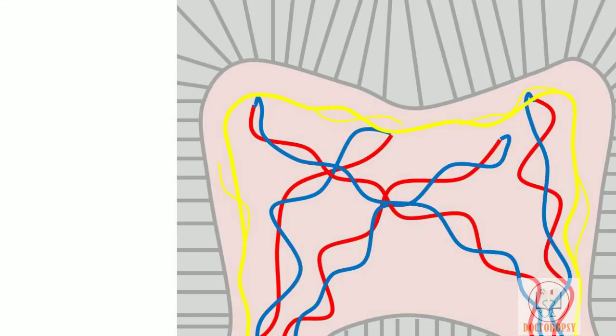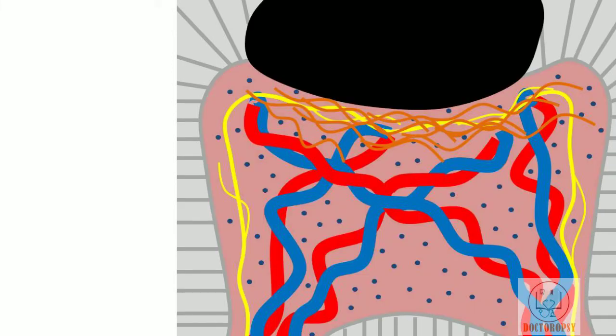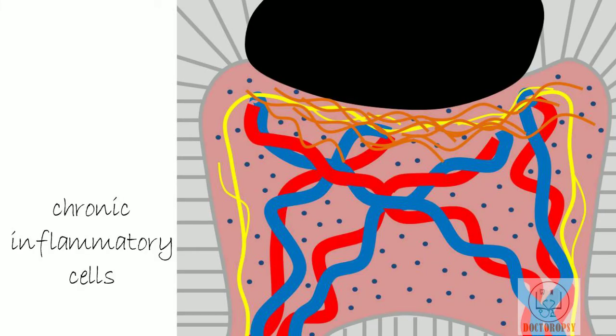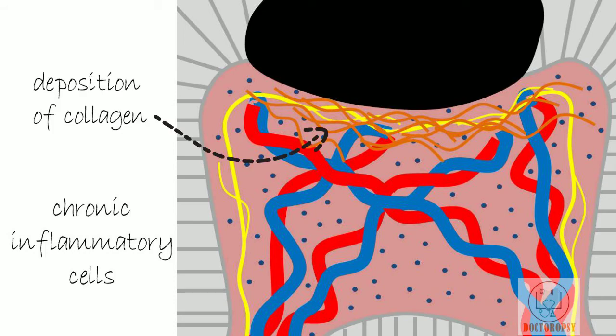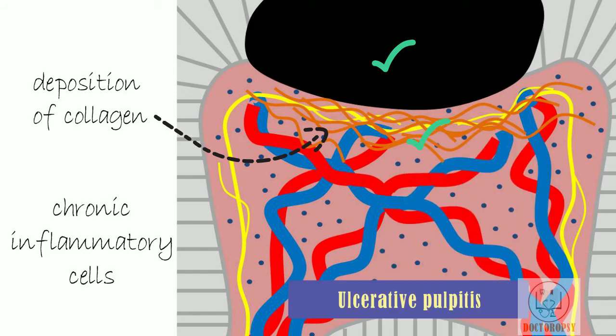The histological picture shows features of chronic inflammation. Inflammatory cells like lymphocytes and plasma cells are seen in abundance. There may be deposition of collagen by pulp tissue to ward off the microbes. This kind of pulpitis with wide open exposure and dense collagen deposition is sometimes called ulcerative pulpitis.